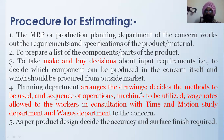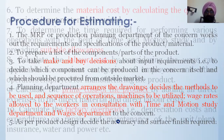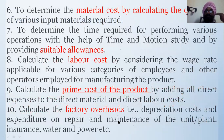The planning department arranges the drawings, decides the method and sequence of operations, machines to be utilized, and wage rates allowed to workers — in consultation with the time and motion study department and wages department. They also decide the accuracy and surface finish required, because if accuracy is increased, the time required will also increase.